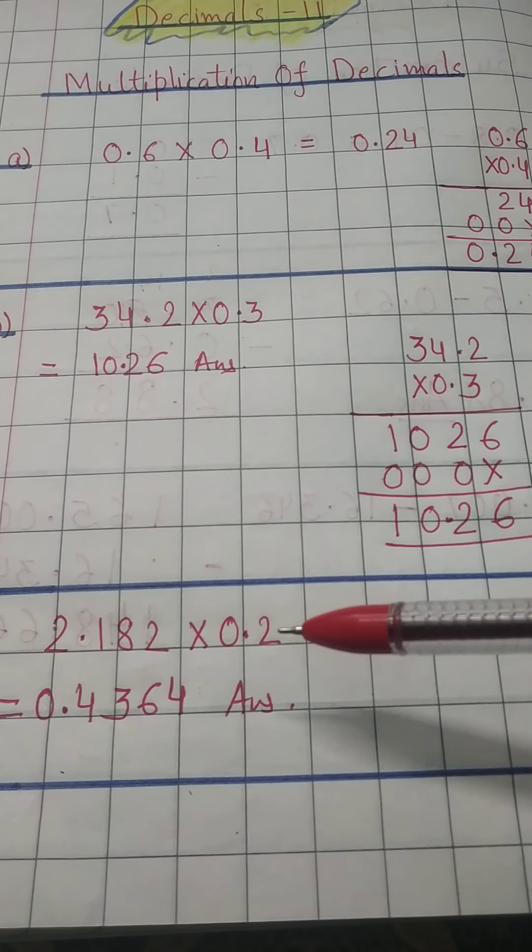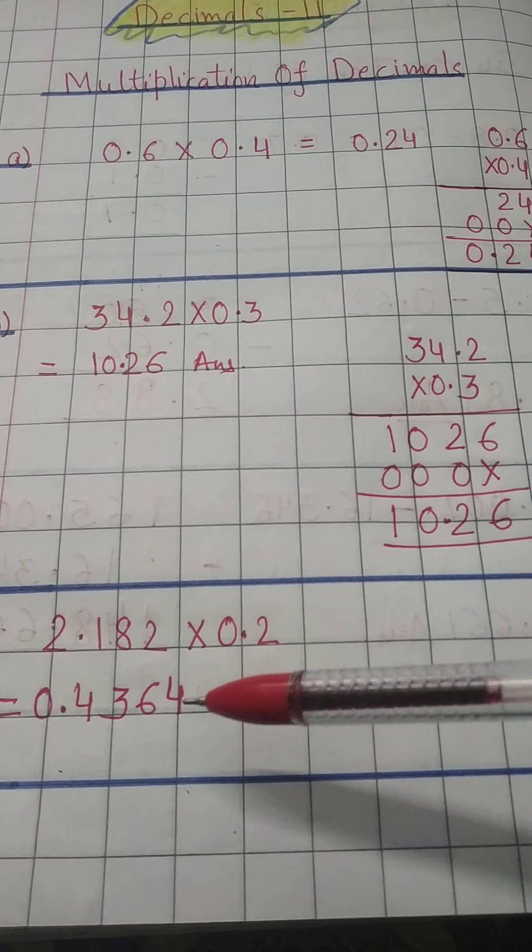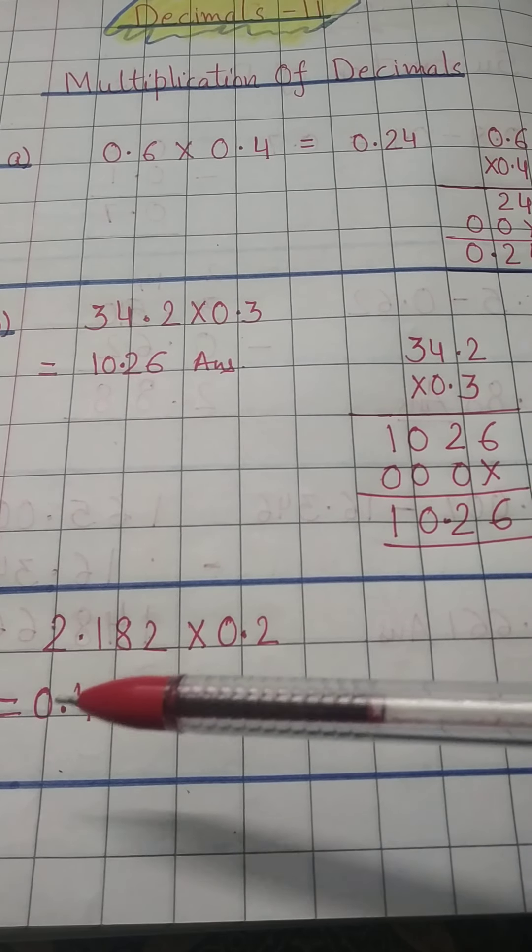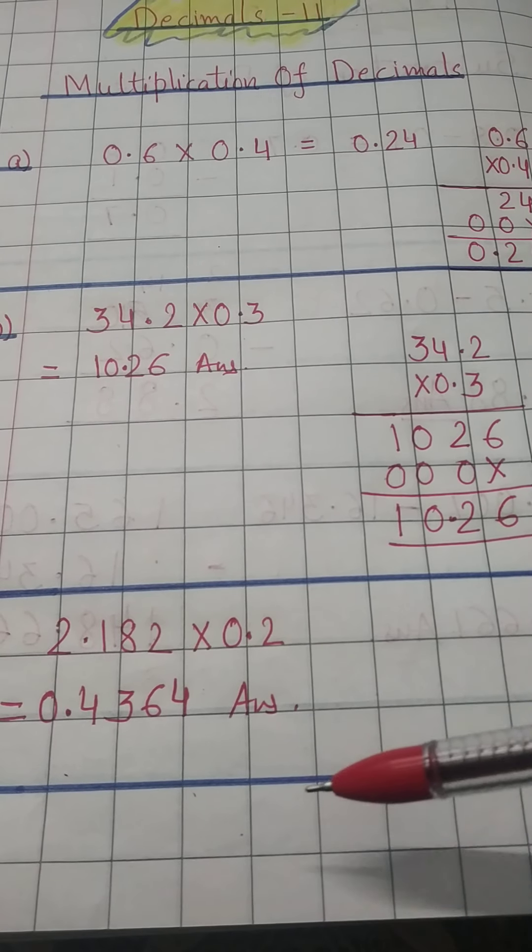But here you will count the decimal places: 1, 2, 3, 4, and here 1, 2, 3, 4. So you will put decimal before here, and you will put 0 before decimal, right? So this is the answer.